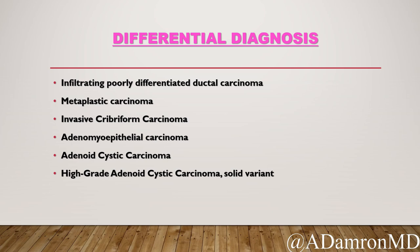Cribriform carcinoma typically presents as a lower-grade invasive tumor, so that may not fit this histology. Could it be an adenomyoepithelial carcinoma - something that arose from an adenomyopithelioma with malignant transformation of the myoepithelial or epithelial component? That's worth considering. Adenoid cystic carcinoma is something you should think about given that basement membrane-like material, but it's a little higher grade than we typically see. The solid variant could be considered, but even then, is the grade too high? The nuclei and high mitotic activity make you wonder if it truly fits that category.